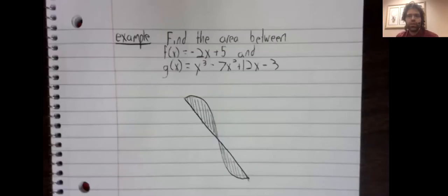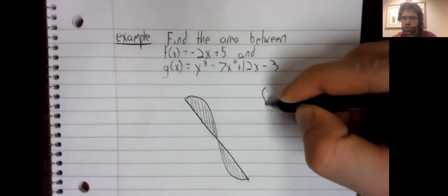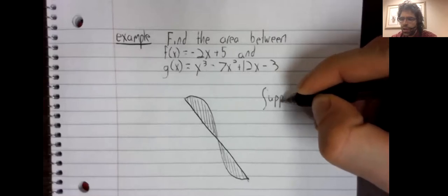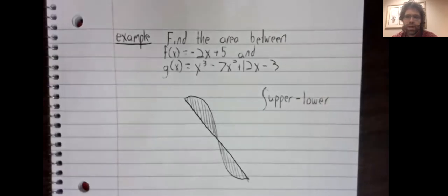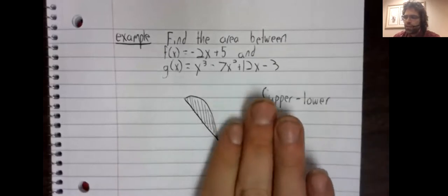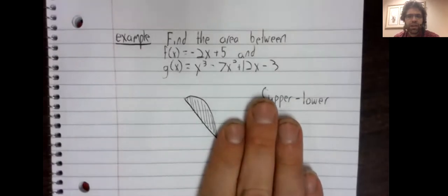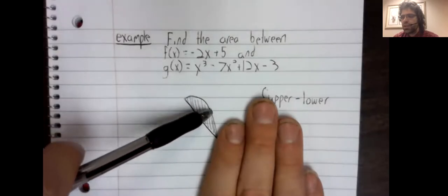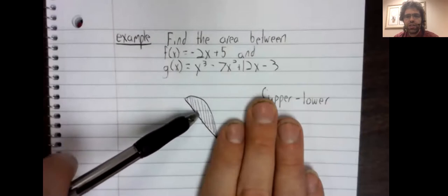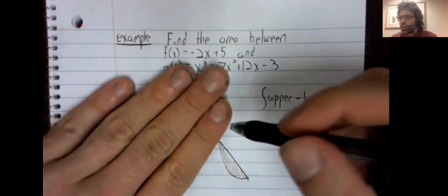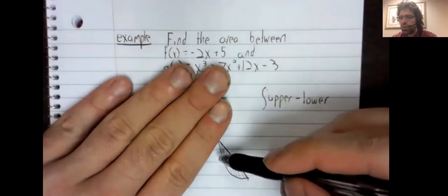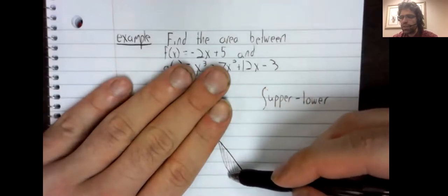So without explicitly saying that x runs from this to that, the question we're asking does make sense. The next thing you notice, an additional complication. Our formula is the integral of the upper curve minus the lower curve. Here the upper and the lower curve switch.